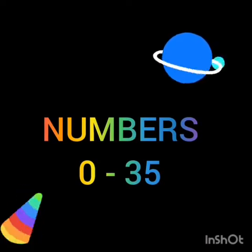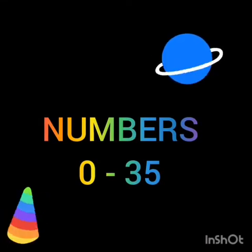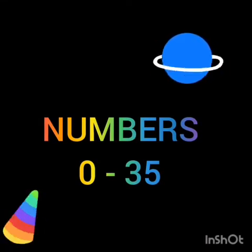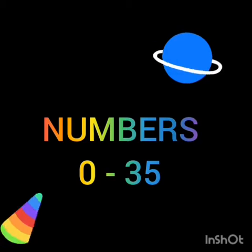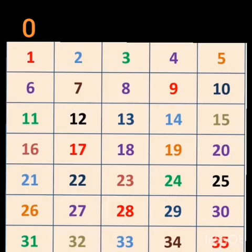So children, now let's say numbers from 0 to 35. Let's start. 0, 1, 2, 3, 4, 5, 6, 7, 8, 9, 1-0, 10, 1-1, 11.